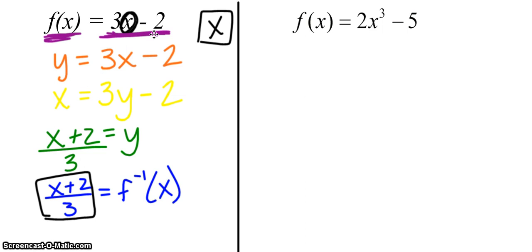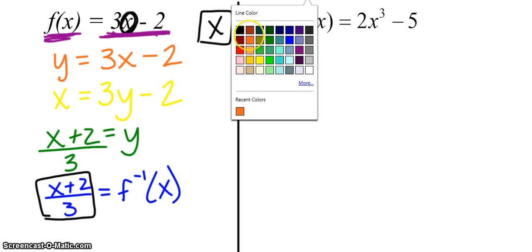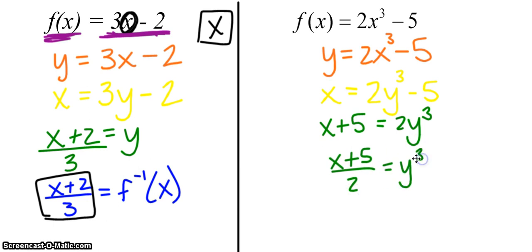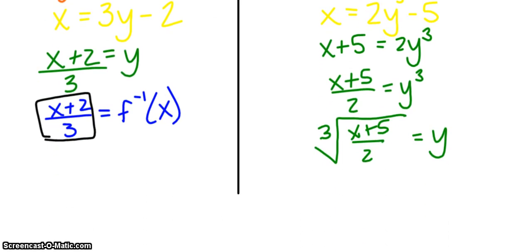Moving on to f(x) over here, let's apply that first step of replacing f(x) with y. We already determined this one has an inverse from that horizontal line test. Then it says to replace all y's with x's and all x's with y's. Now we need to solve for y. This one's going to have a little bit more work to it. I'm going to add 5 to the other side. I'm going to divide both sides by 2. And then to undo that raising to the third power, I'm going to take a third root.